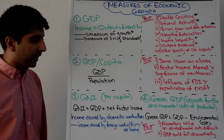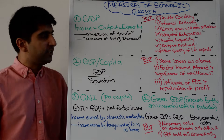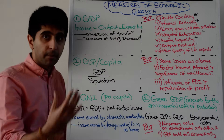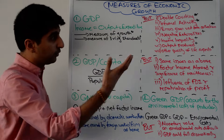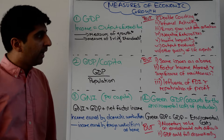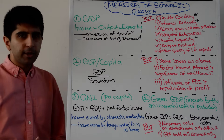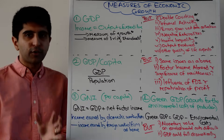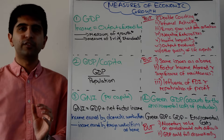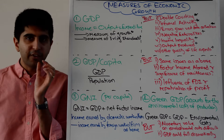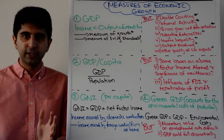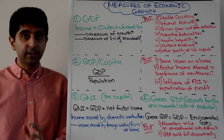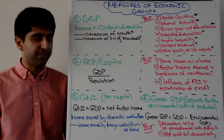However, the problem with GNI is that a lot of the issues mentioned earlier still remain. In fact, all of them still remain. Some economists would argue that all of these measures share one fundamental flaw: the environmental costs of production are not included at all, and they can significantly harm living standards.